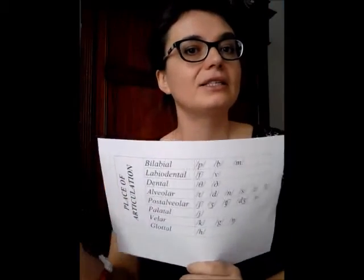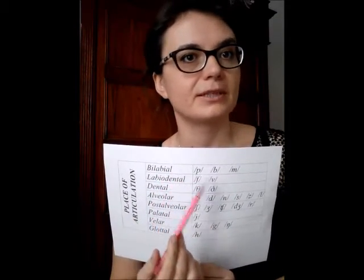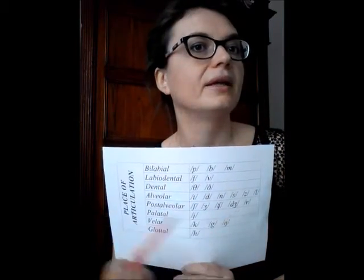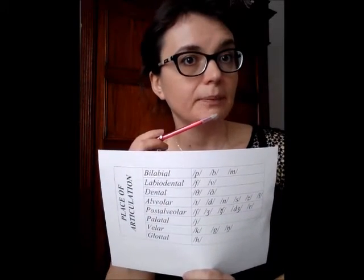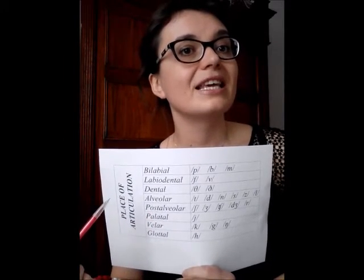There is nothing left but to check if it is really so. Take the mirror and let's see. Bilabial consonant sounds — just see if indeed the lips are involved in the production of this speech sound: P, B, M. You notice that the bottom lip moves towards the upper lip. Labiodental: F, V — the bottom lip moves towards the top teeth.